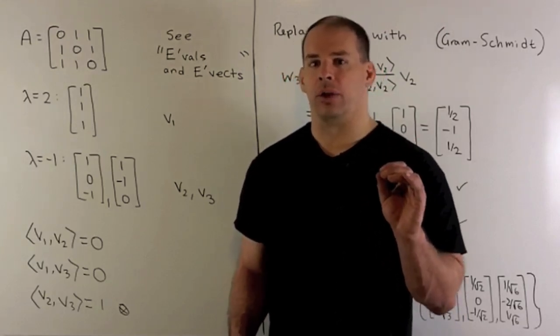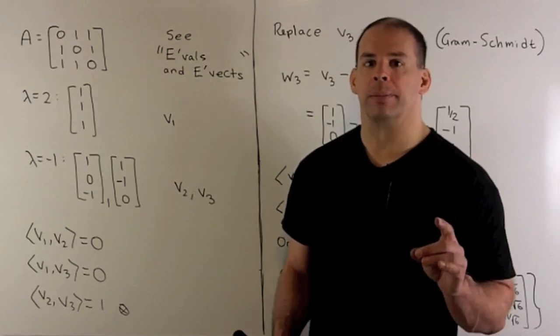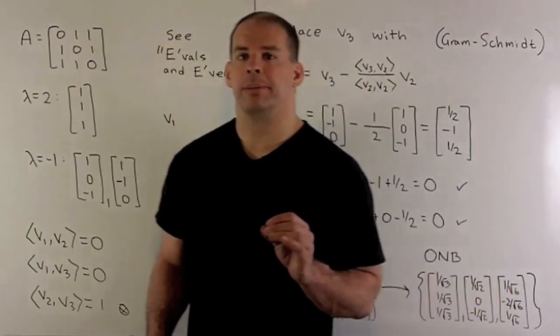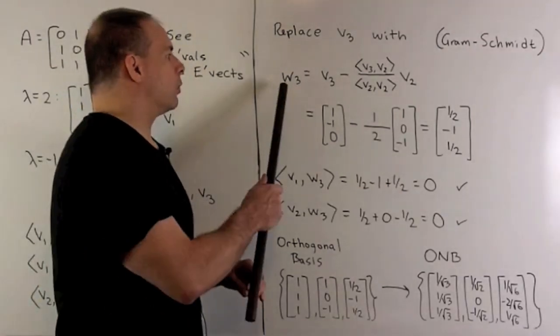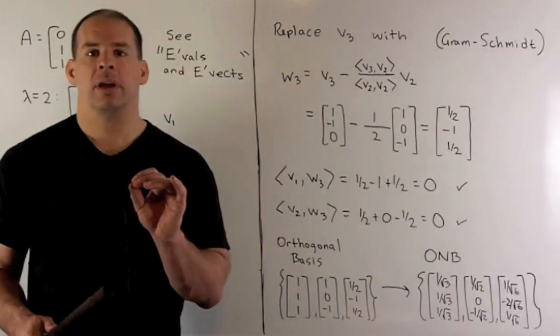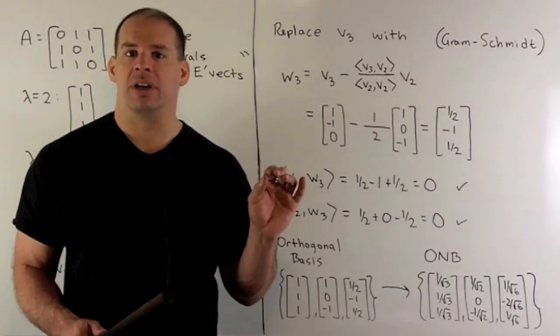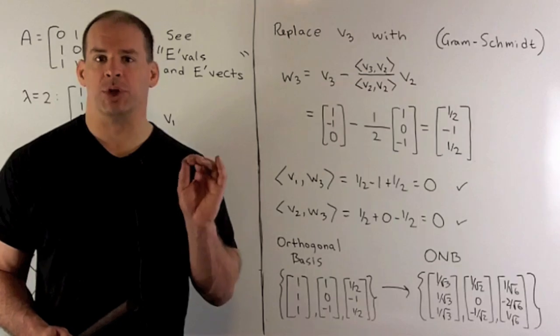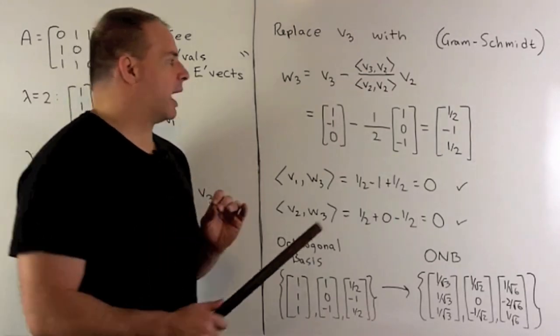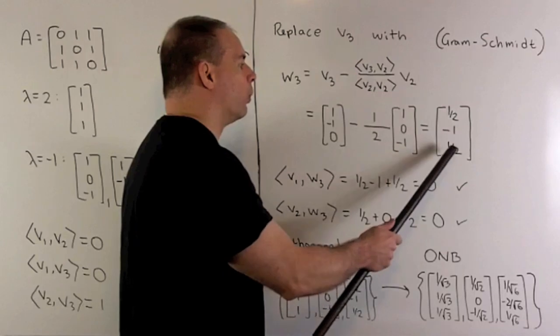We can make it orthogonal if we replace V3 with another vector. What we'll do is replace V3 with W3. We're going to take V3 and subtract off the part of V3 that's in the direction of V2. We do that using a recipe from Gram-Schmidt. When we work that out, we get the vector 1 half, minus 1, 1 half.